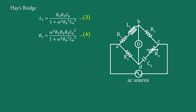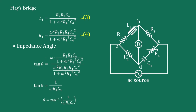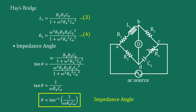Now we calculate parameters. First, the impedance angle theta. Using the general formula for an R1-L1 series connection, tan(theta) equals omega·L1 upon R1. Substituting values of L1 and R1 from equations 3 and 4, terms cancel, giving tan(theta) equals 1 upon omega·R4·C4. Therefore, theta equals tan⁻¹(1 upon omega·R4·C4). This is the impedance angle of the bridge.